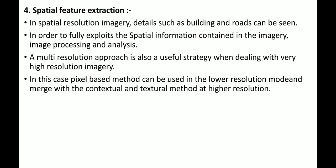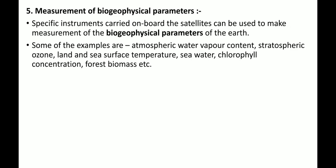The fifth procedure is measurement of bio-geophysical parameters. Specific instruments on board satellites can be used to make measurements of the bio-geophysical parameters of the earth. Important bio-geophysical parameters include atmospheric water vapor content, chlorophyll concentration, land and sea water surface temperature, and forest biomass. These are measured using specific satellite instruments for image processing and interpretation.